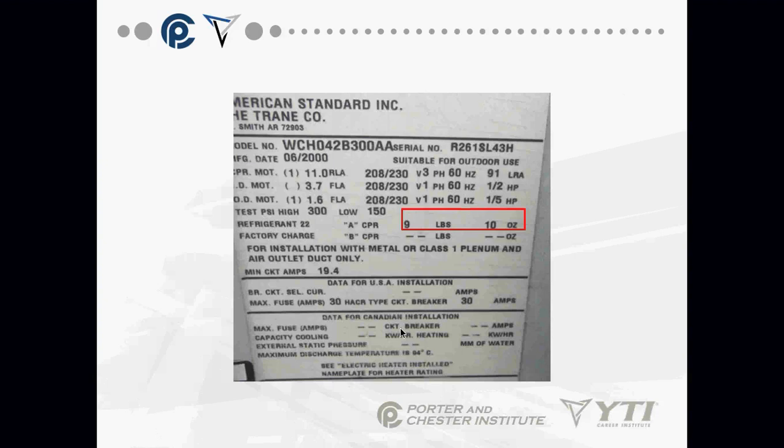All refrigerant systems that come pre-charged from the factory have a label stating the refrigerant amount. We have to adjust that for line set length and conditions. If a system is completely empty — say someone hit the line set with a lawnmower — you have to put the refrigerant back in, so understanding weight in pounds and ounces is essential.